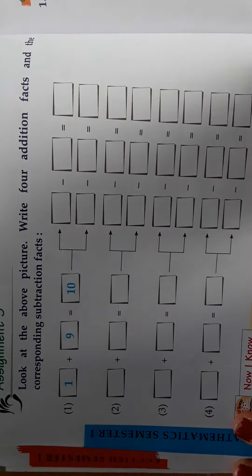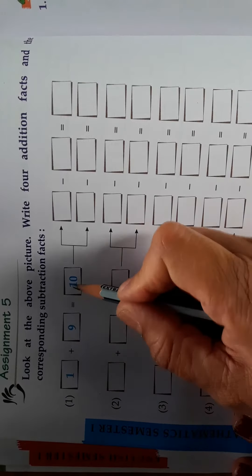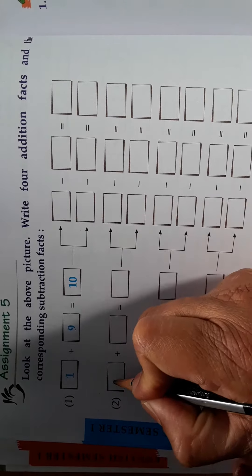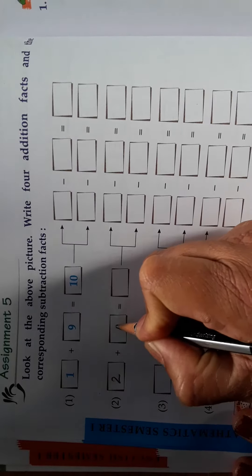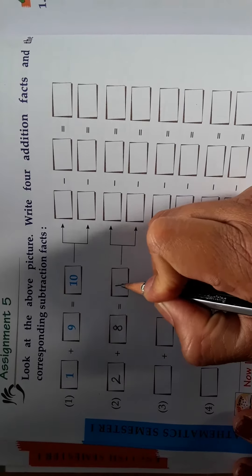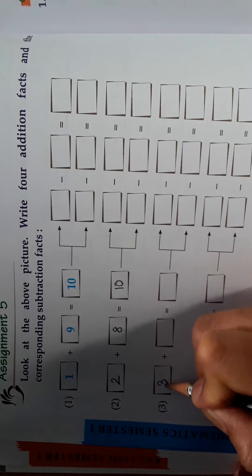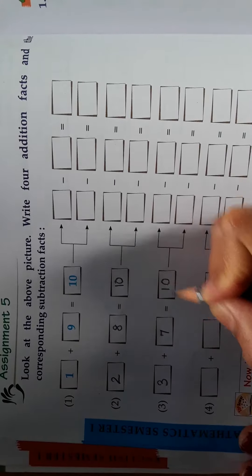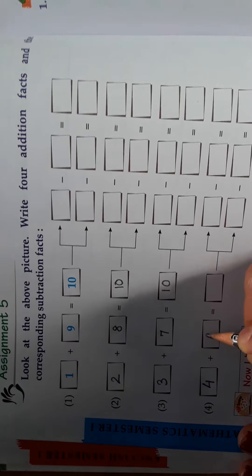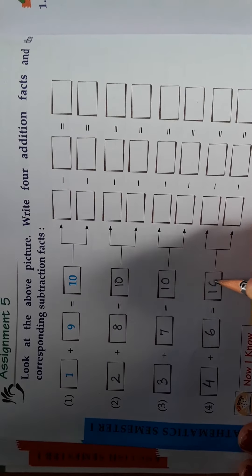the corresponding subtraction facts. See, 1 plus 9 is equal to 10. Like that, 2 plus 8 is equal to 10. Like that, 3 plus 7 is equal to 10. Like that, 4 plus 6 is equal to 10.